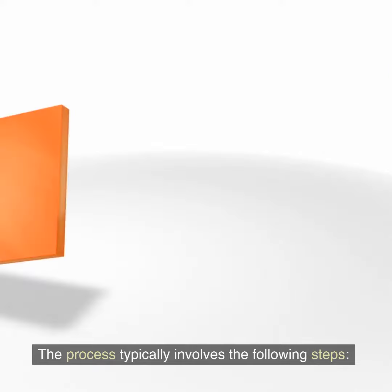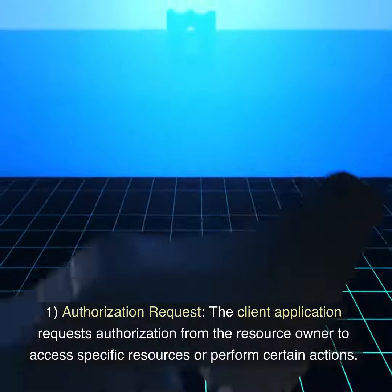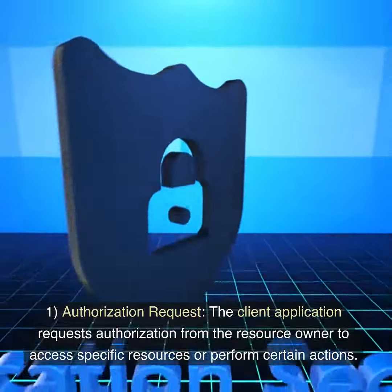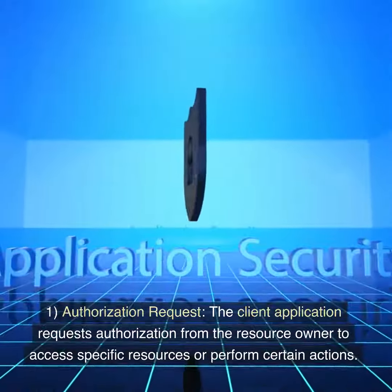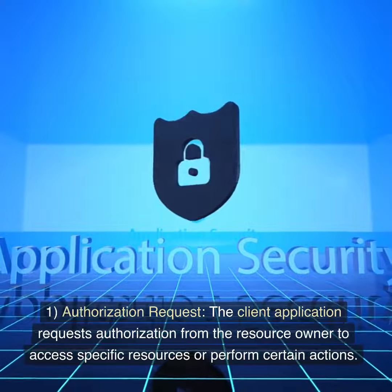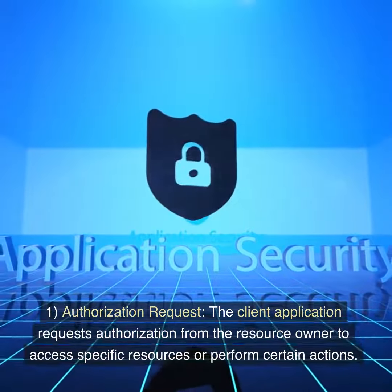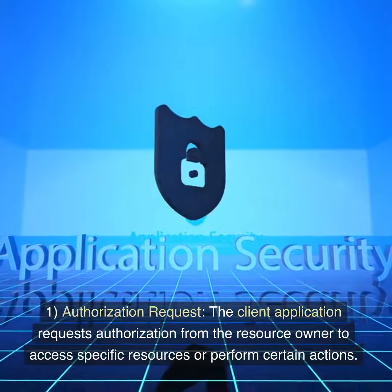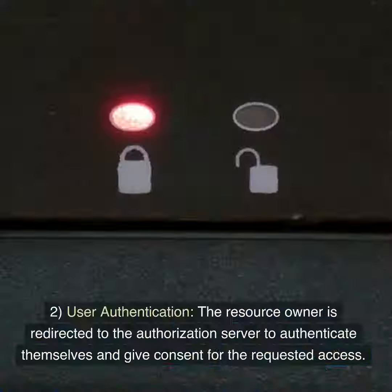The process typically involves the following steps. Step 1: Authorization request. The client application requests authorization from the resource owner to access specific resources or perform certain actions.